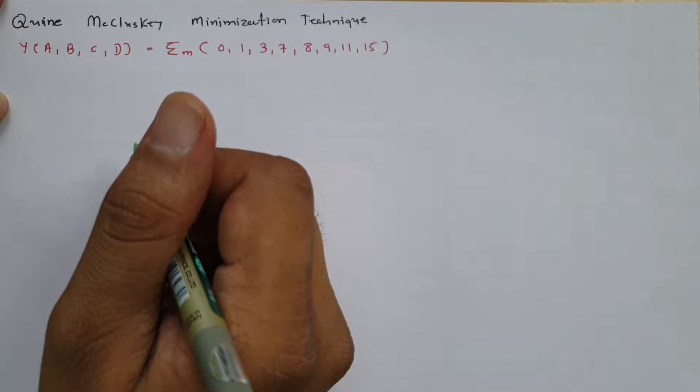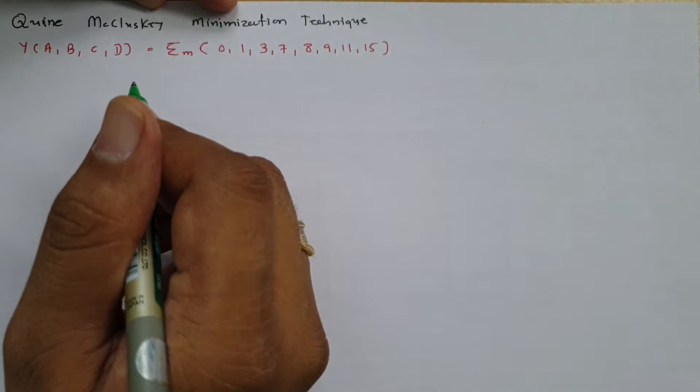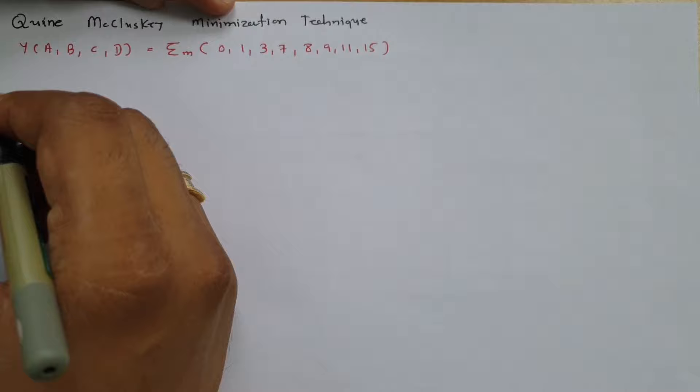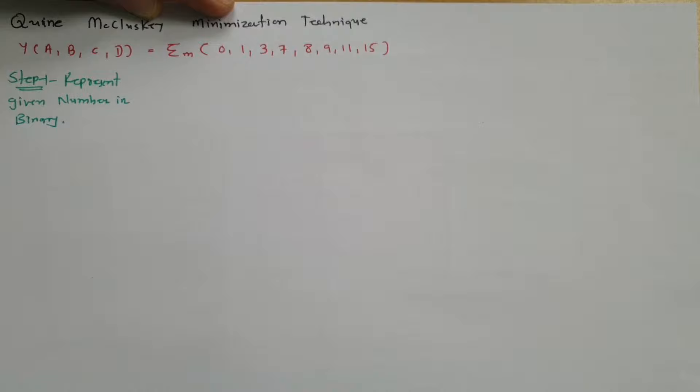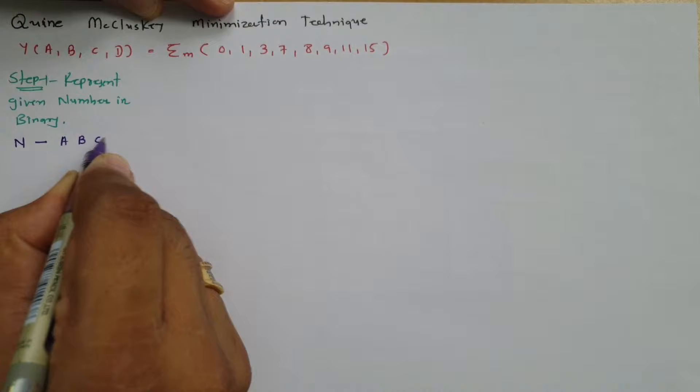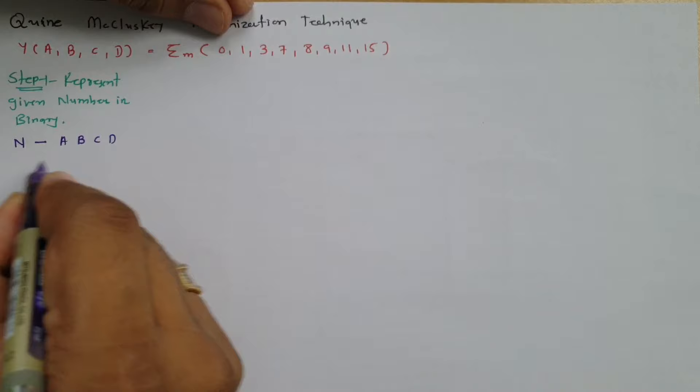So here, the first step is to represent the given numbers in terms of binary. Here you see y is a function of 4 variables, so we need to represent the given numbers in 4 bits — A, B, C, and D. I will represent them one by one.